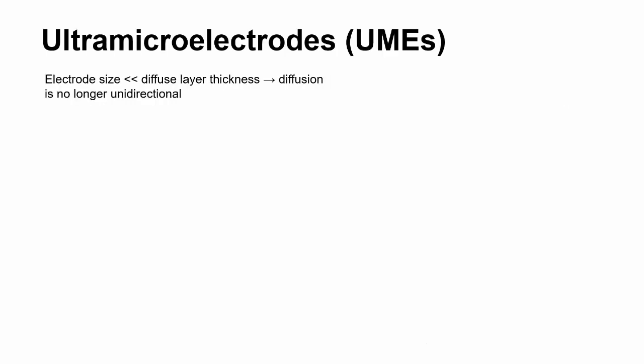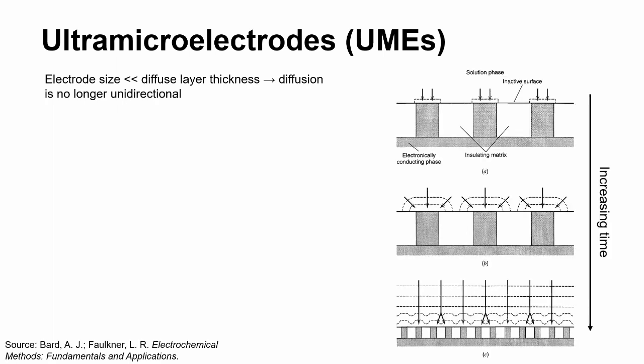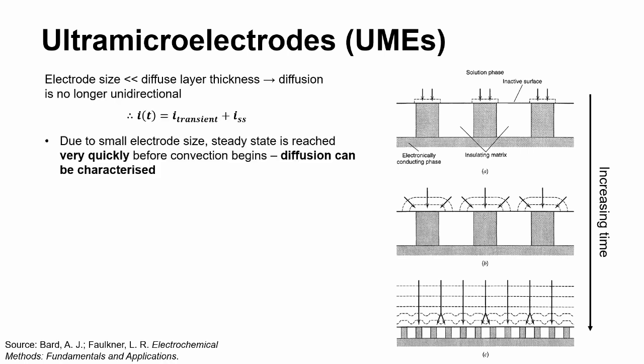Finally, diffusion can also be characterized using ultramicroelectrodes, the size of which is smaller than the diffusion layer thickness, that is, on the order of micrometers. Thus, diffusion can no longer be considered unidirectional, which produces a static concentration gradient in a relatively short time before convection currents arise.